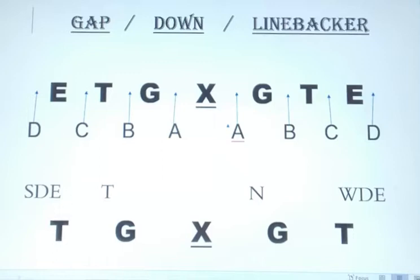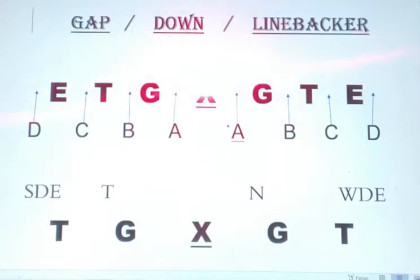When talking about the gap down linebacker blocking scheme, the first thing offensive linemen are responsible for is that gap — whether they're blocking down, reaching, blocking out, blocking to the right, or blocking to the left. For example, if this center has to go left on an offensive run play, the first thing he checks is his gap. That is the first thing in the sequence of gap down linebacker.